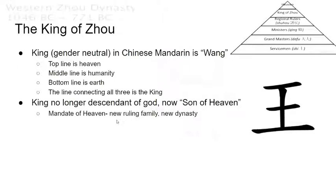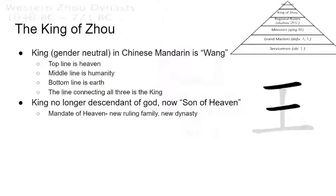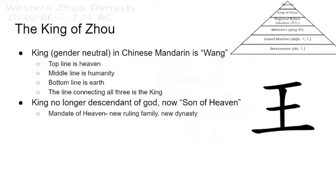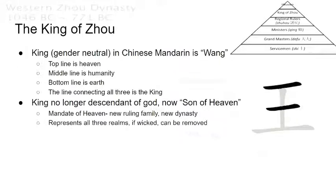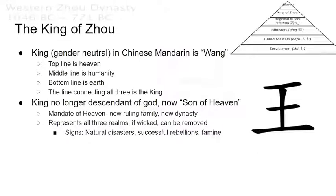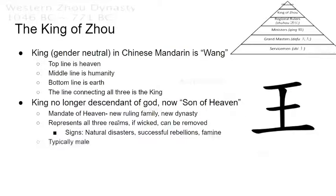The King of Zhou is no longer descended from a god. Instead, they are now known as the Son of Heaven — and most kings in Chinese history were male, which is why that phrasing is used, though 'king' is technically gender-neutral. A king had a mandate of Heaven, meaning they were the representative of Heaven's will rather than a descendant. The Son of Heaven is a somewhat misleading term because, as king, you're not supposed to do whatever you want — you're supposed to do your best representing Heaven, Earth, and humanity. If you don't, then rebellions could happen, your ruling family could be replaced, and you have a new dynasty. Warning signs of being replaced include natural disasters, successful rebellions, and famine.